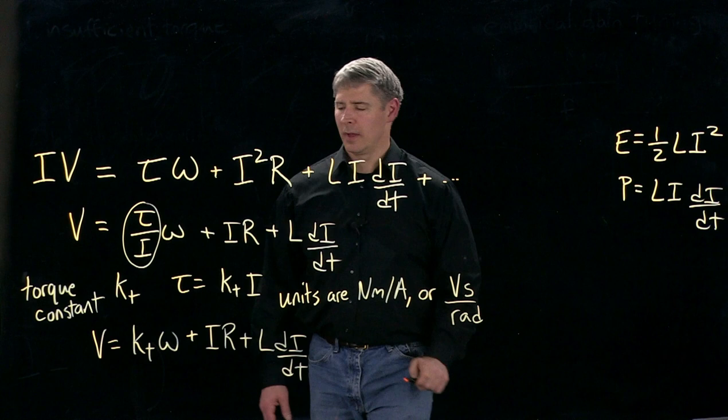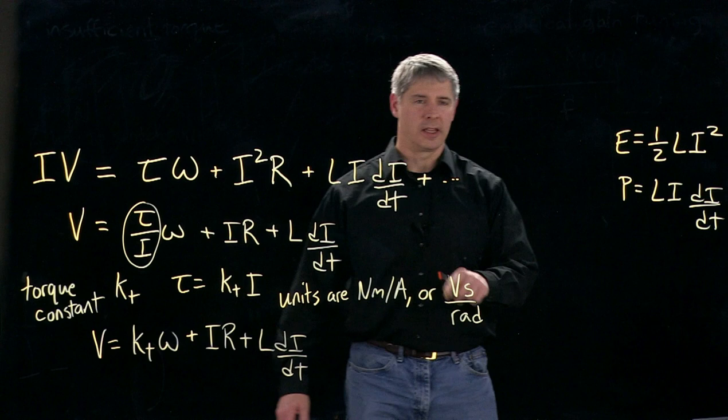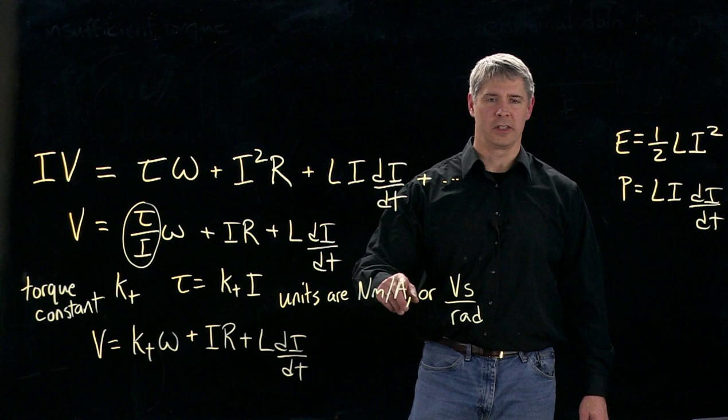Okay, so the SI units of the angular velocity of the motor are radians per second. So therefore, since this torque constant times angular velocity is a voltage, then we must have units of volt seconds per radian. So when we write the torque constant with these units, Newton meters per amp, we call it a torque constant.